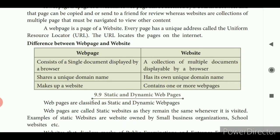The difference between web page and website: a web page consists of a single document displayed by a browser and shares a unique domain name — it makes up a website. A website is a collection of multiple documents displayable by a browser, has its own unique domain name, and contains one or more web pages.